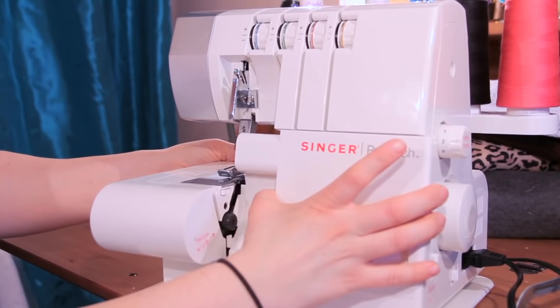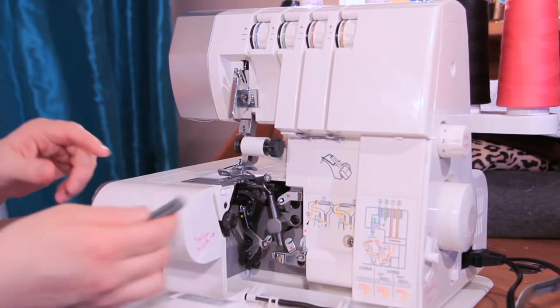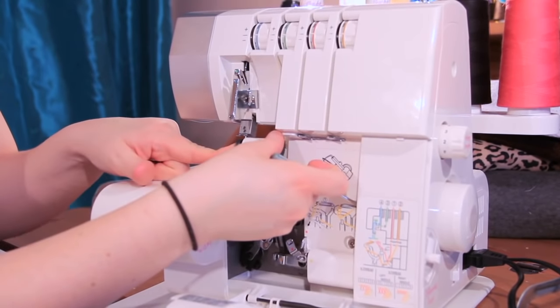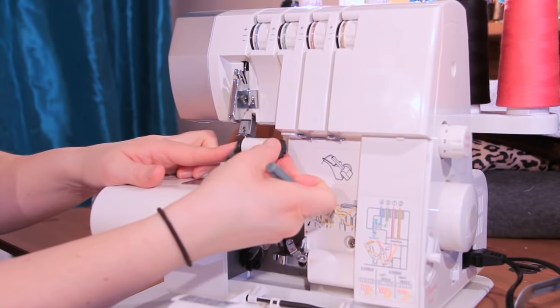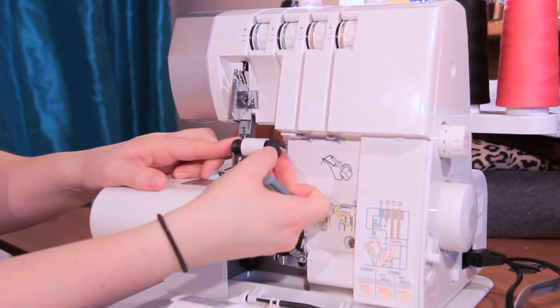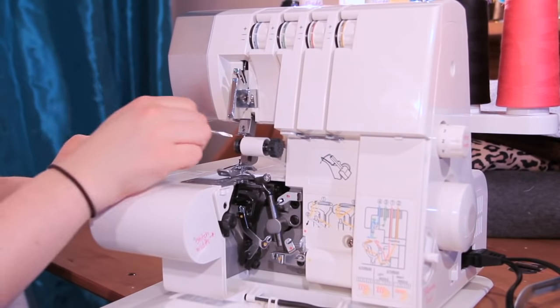First we're going to point out all the different parts of your serger so you can move the faceplate out of the way. First we have the blade and you can engage it and disengage it depending on the stitch you're doing. So this is engaged and this is disengaged, be careful this is very sharp.